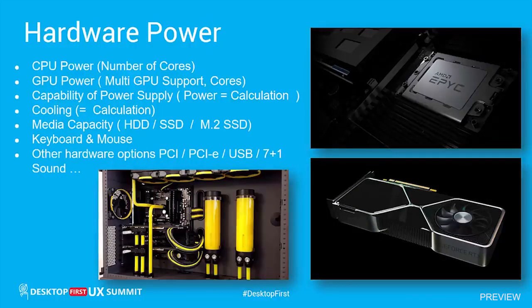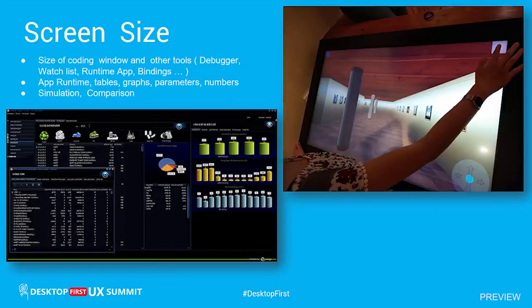On the hardware power side, you have better CPUs than mobile — number of cores are higher, frequencies are higher. GPU power is also higher. It is easier to develop an application on the desktop, and another important thing is screen size.